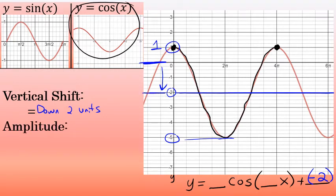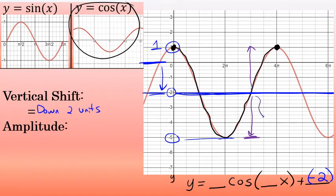Using the vertical center line at negative 2, I can identify the amplitude — the number of units from the center to the lowest point, which is the same as the units from center to the highest point. From the center at negative 2 down to the lowest point at negative 5 is 3 units, and from negative 2 up to the highest point at 1 is also 3 units. So the amplitude is 3, and the value of a is 3.